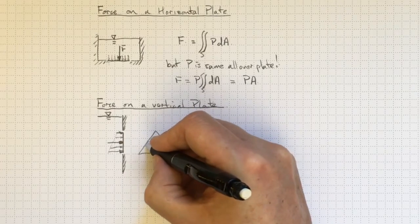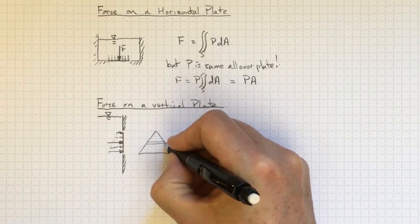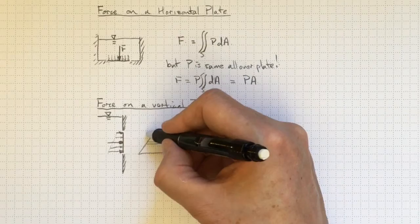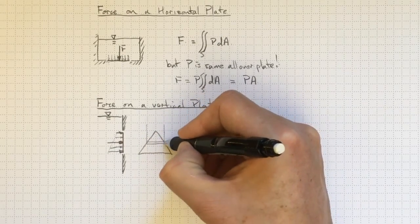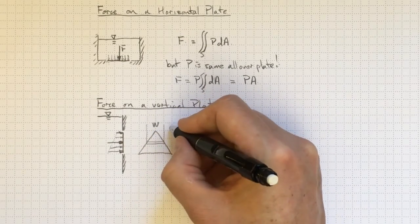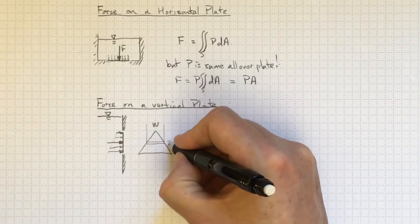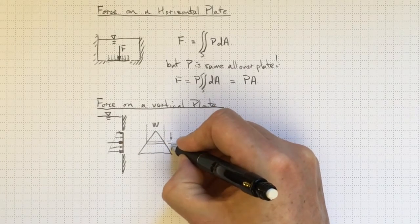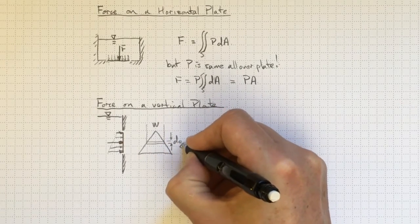So we could look at a little segment like this that was all at the same distance under the water. The plate is W wide at that point. And this little incremental area here is dy thick.